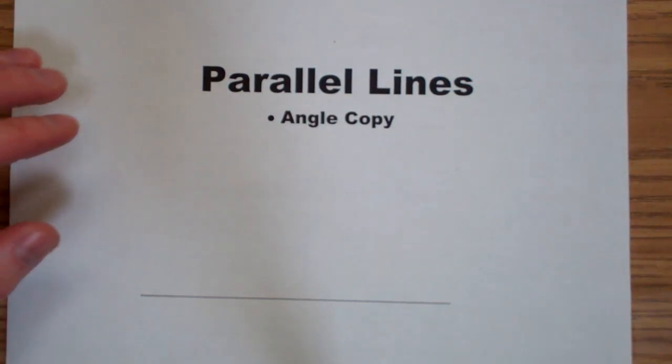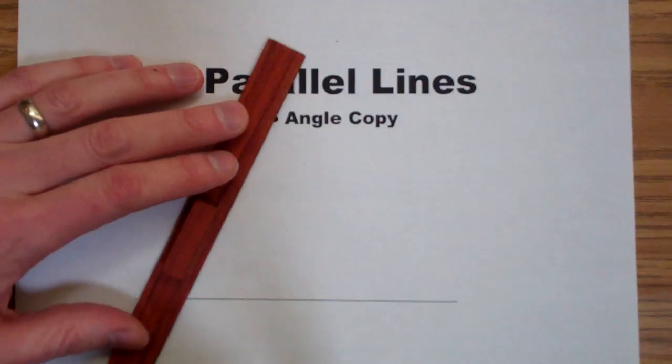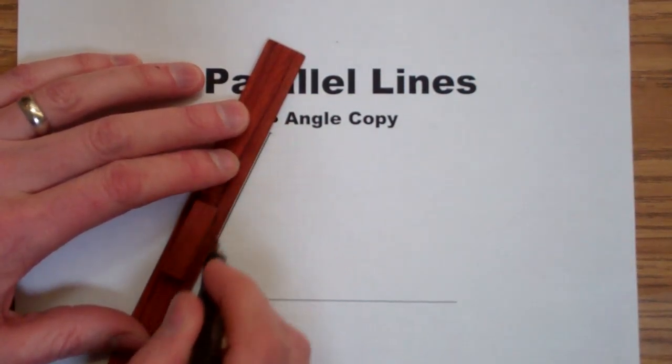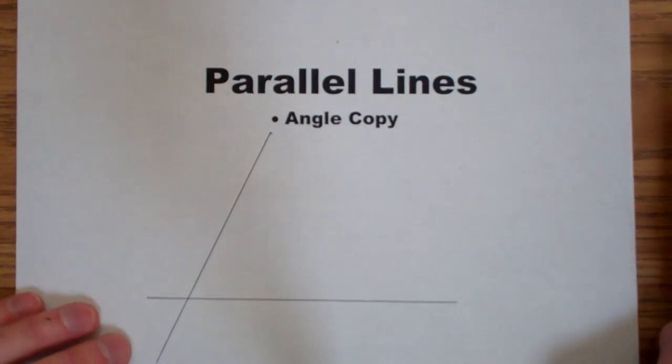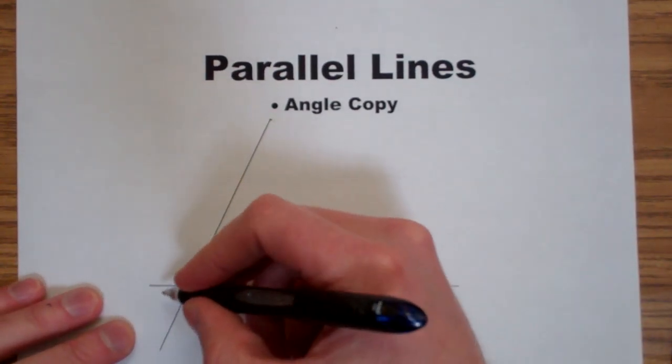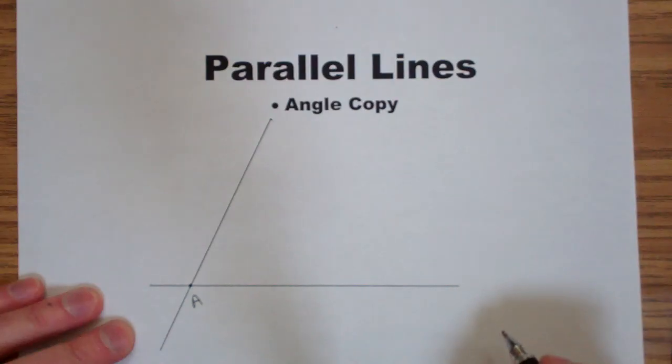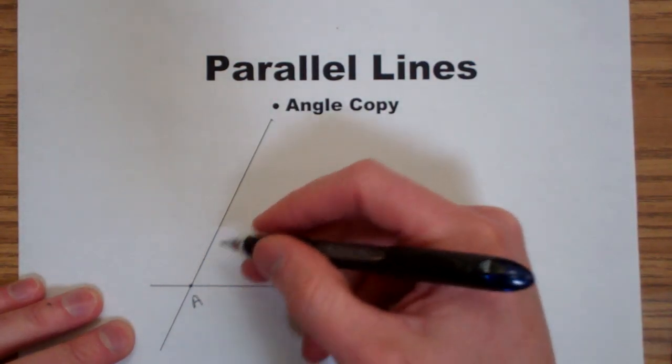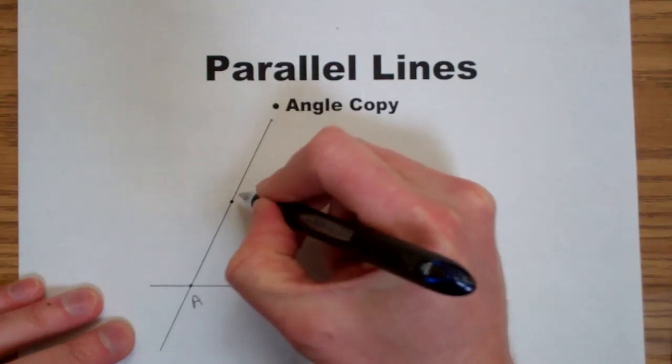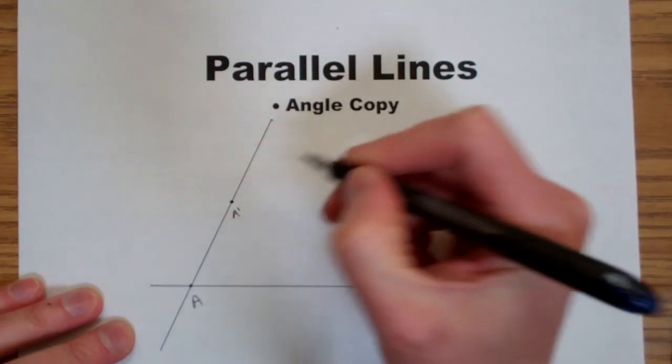To do that, I'll first make an angle and label the vertex A. Then I'll copy that vertex here and label it A prime.